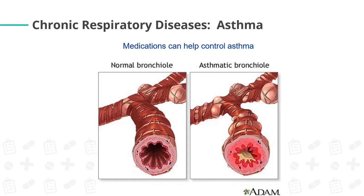Another example of chronic respiratory disease is asthma. As shown in the picture, this is an illustration of a normal bronchial and an asthmatic bronchial. For the asthmatic bronchial, you can see there is inflammation, redness, and swelling in the bronchials, and there is also a deposit of phlegm. Medications can help control asthma.